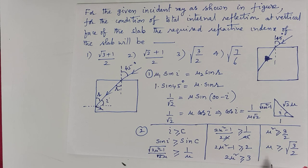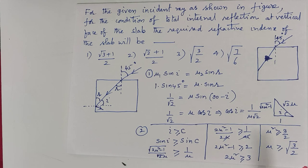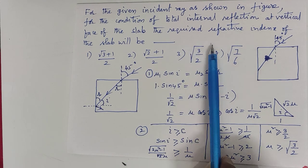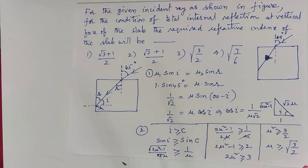That means the minimum refractive index of the glass slab should be √(3/2). That is third option. Thank you.